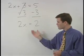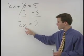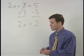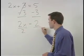And we're left with a situation that is just like the problems in the previous section. To get x by itself, since it's being multiplied by 2, we just divide both sides of the equation by 2.